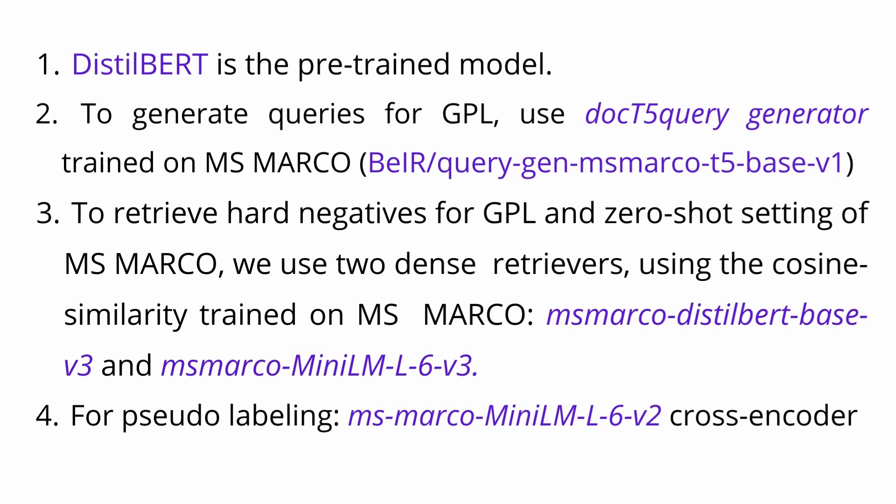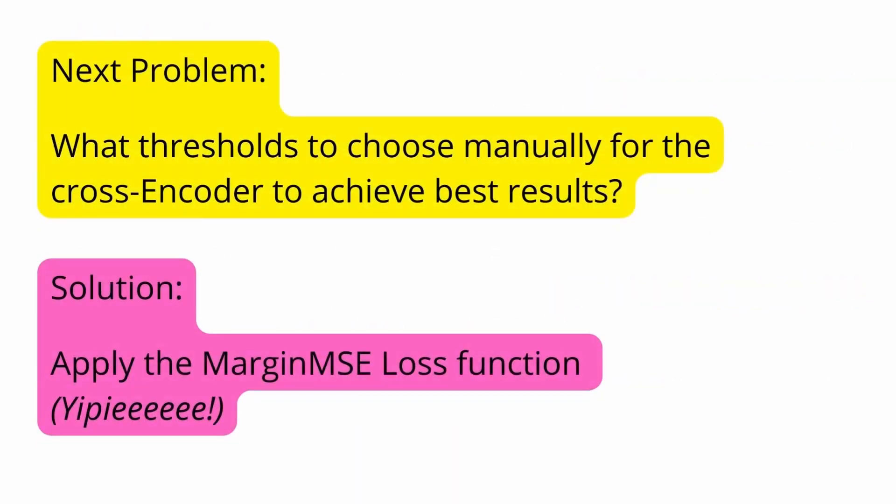Now we have a trained dataset we can use for our main AI. But there's another problem: with the cross encoder we have thresholds — what threshold values should we use? Very high or very low? Who defines the best threshold for a particular system? For astronomy or particle physics, what is an adequate threshold? You can play around with meta-parameters, but there is a better solution.